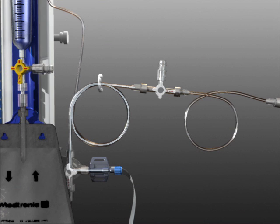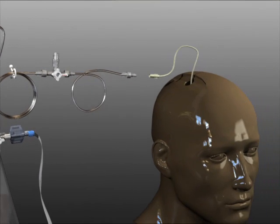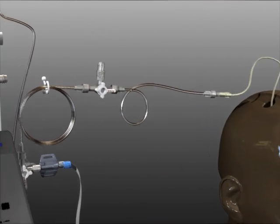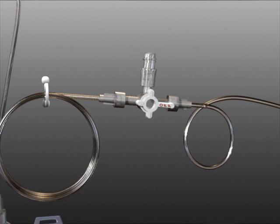Using sterile technique, attach the patient's catheter to the end of the patient line. Be careful to prevent air bubbles from being introduced into the patient line.